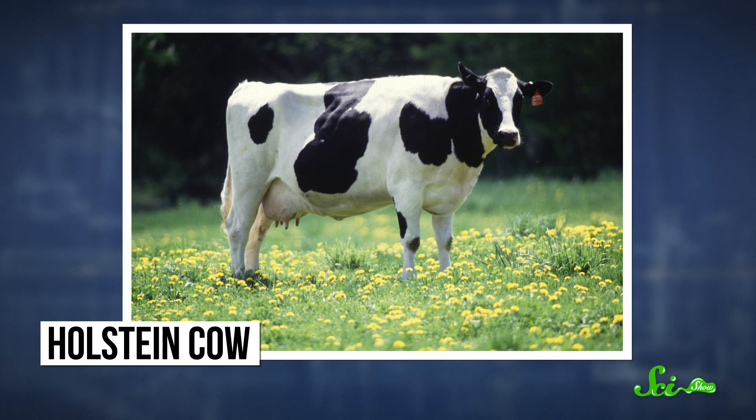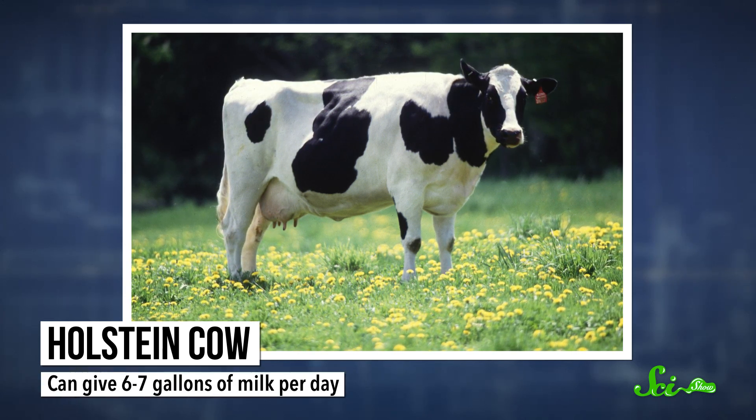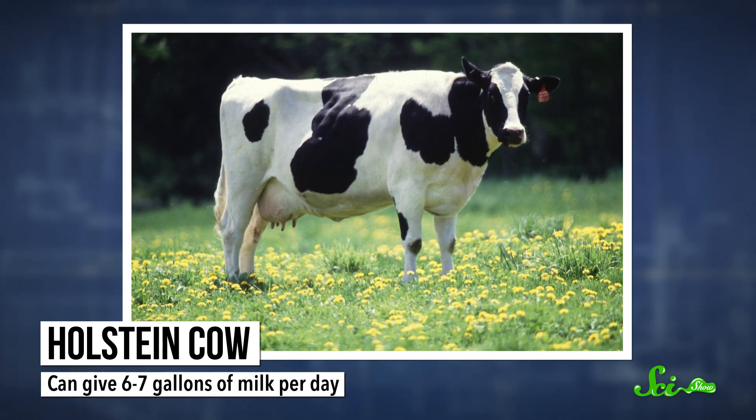Why? Well, first, picture a cow. They're big, and they're pretty nice. Over generations of selective breeding, we've created creatures who can give between six and seven gallons of milk a day. And they're domesticated enough to just line up to do it.